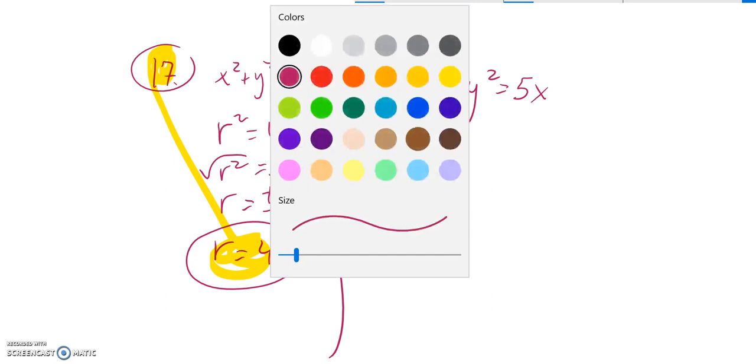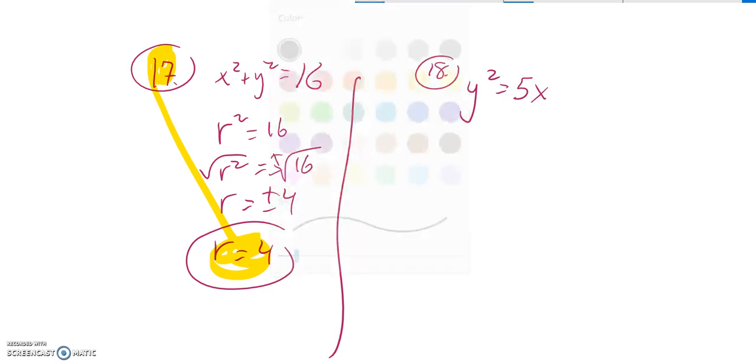And looking at 18, I'm going to do some substitutions here. I know that y is r times sine theta.